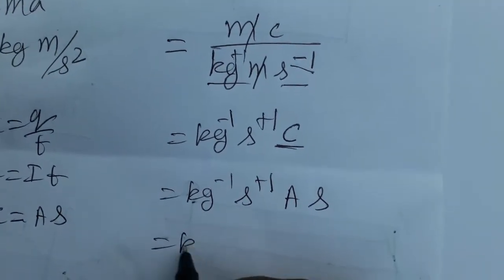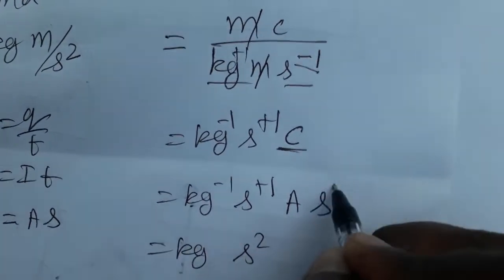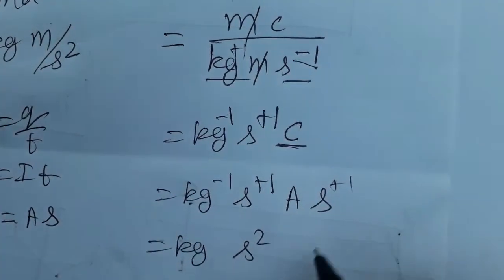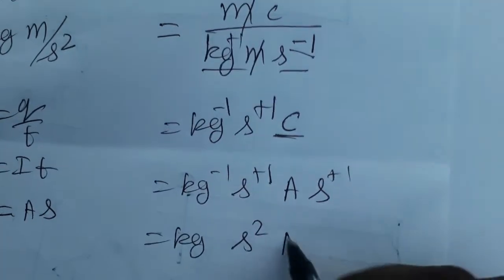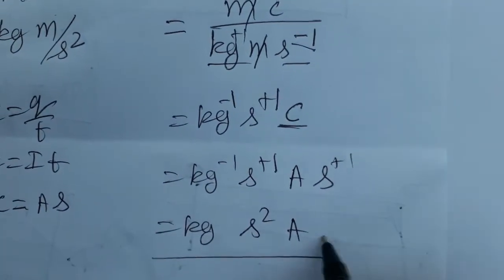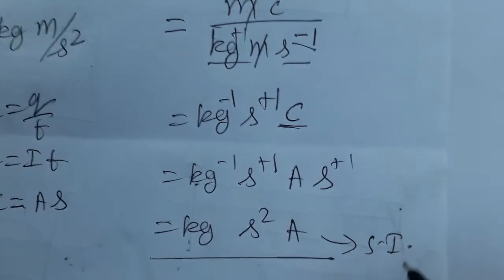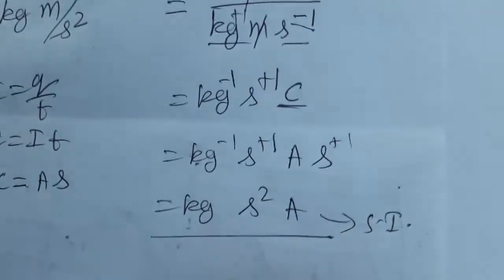So the final answer is kg⁻¹·second²·Ampere. This is the SI unit of mobility of the electron.